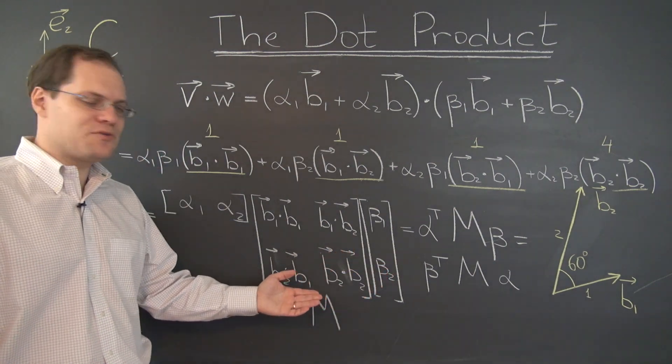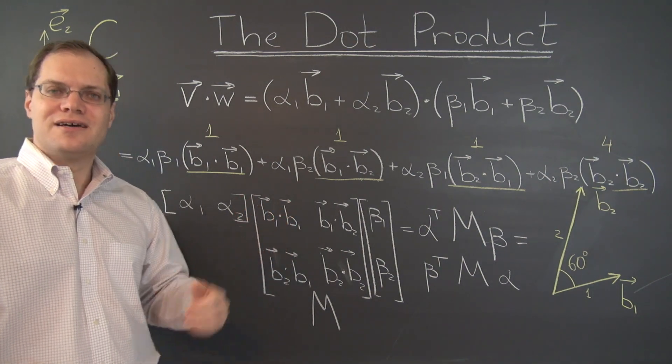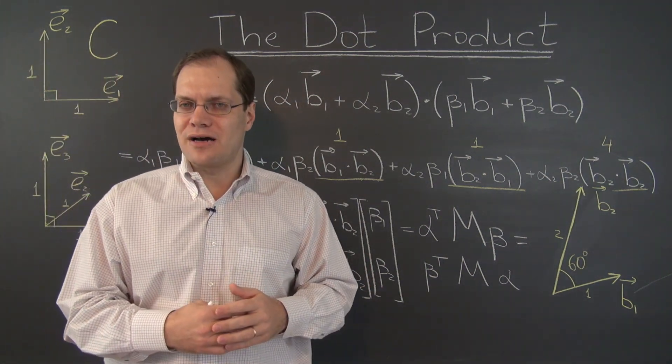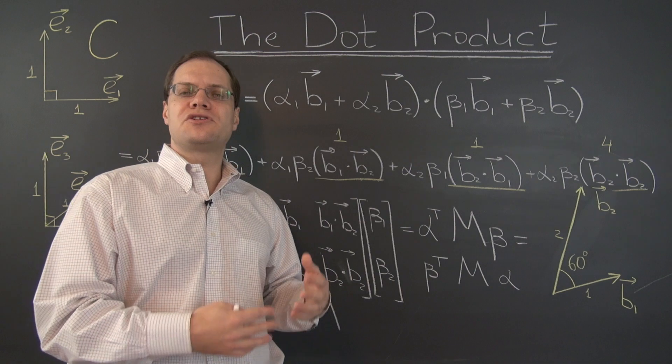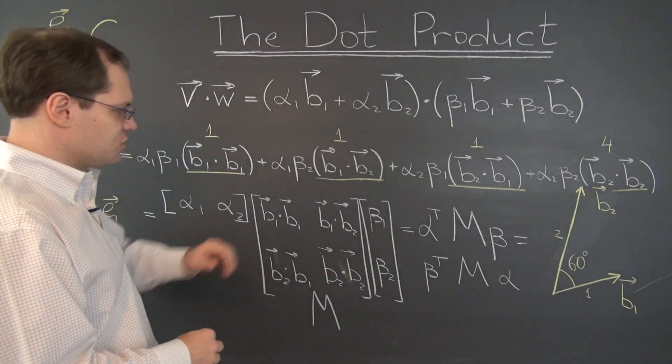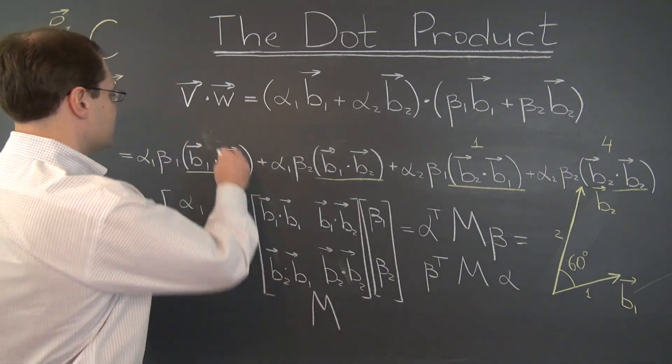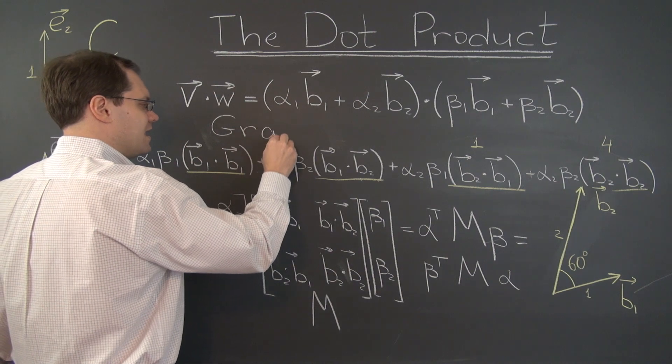Okay, and now the only thing that I can mention is the names for this matrix and there are plenty. One of them is the dot product matrix. Later on it will be the inner product matrix or the matrix representing the dot product with respect to the basis.